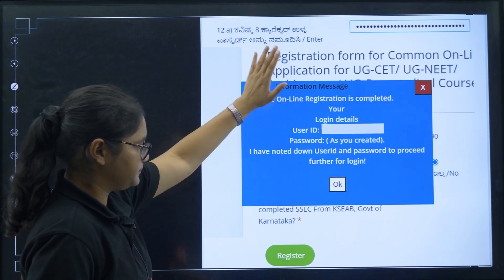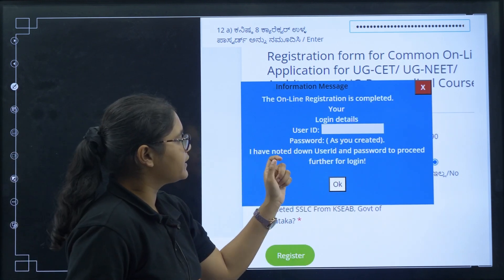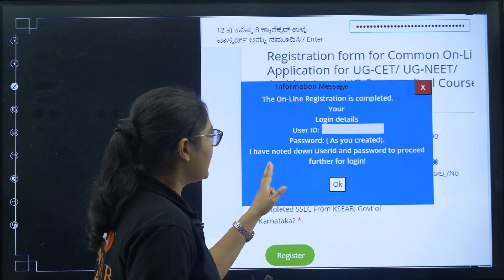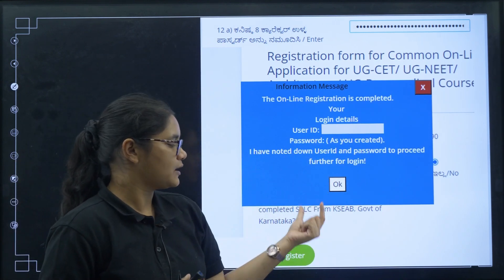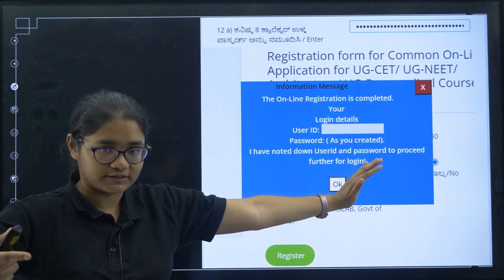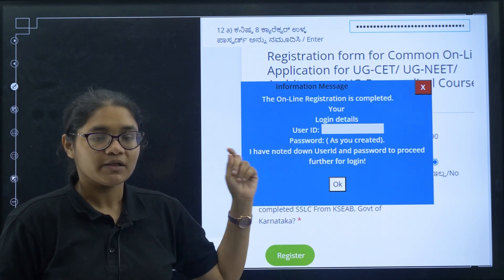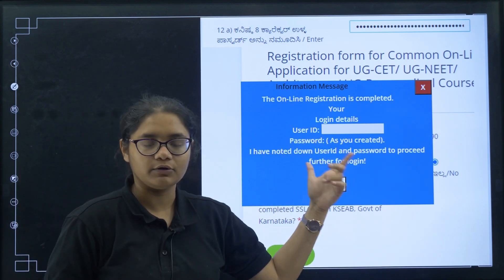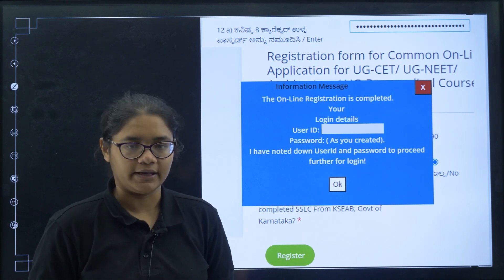Once registration is done, you will see a page confirming that online registration is completed. You will be given a user ID and the password you created will be your login password. Note down the user ID and password to proceed further. It is very important to keep this user ID safe — note it down, tell your parents, and save it both online and offline so you can use it again.